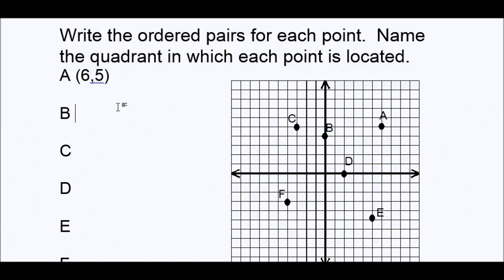Now let's look at point B. We always start at the origin. We did not move right or left — we actually stayed in the middle. That means our first coordinate will be zero. Our y coordinate: we moved up — one, two, three, four. So the coordinates are (0, 4).